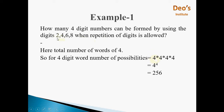At the first position we have 4 possibilities: we can select any of 2, 4, 6, 8. Suppose 2 is selected at the first position. Since repetition is allowed, all four digits are again available at the second position. Similarly for the third and fourth positions. So the number of possibilities is 4 × 4 × 4 × 4 = 4 raised to 4 = 256.